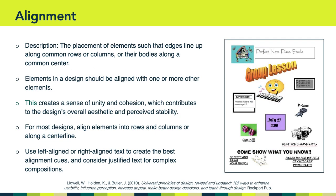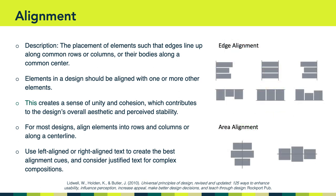We also learned about the importance of alignment. Alignment is the placement of elements such that their edges line up along common rows or columns, or their bodies line up along a common center. Ideally, the elements of the design should be aligned with one or more other elements, because this creates a sense of unity and cohesion, which contributes to the design's overall aesthetic and perceived stability. For most designs, it's desirable to align elements into rows and columns or along a center line. It is recommended to use left-aligned or right-aligned text to create the best alignment cues, and to consider justified text for more complex compositions.